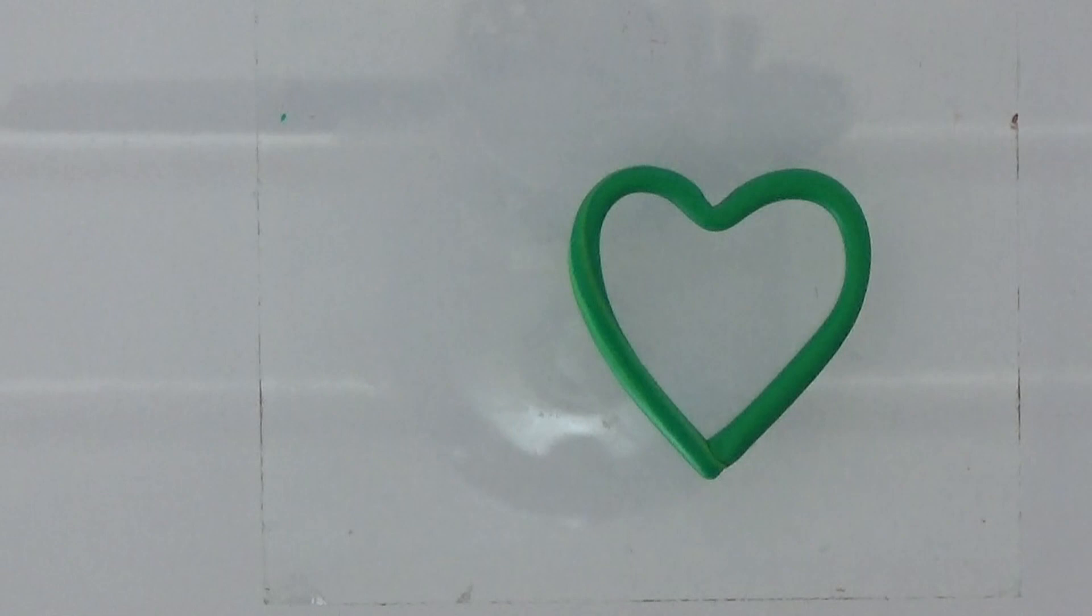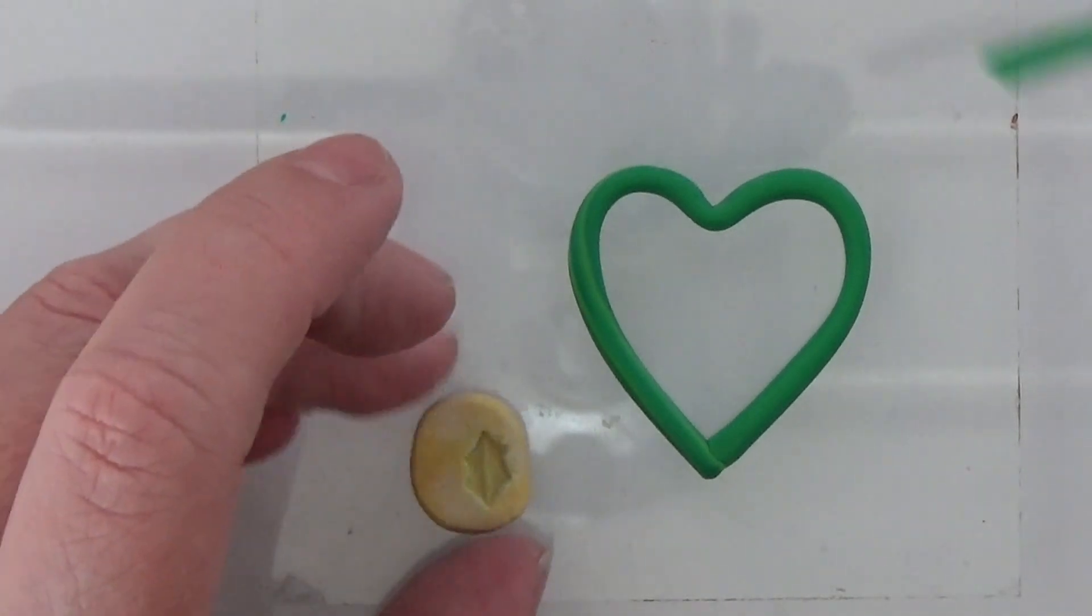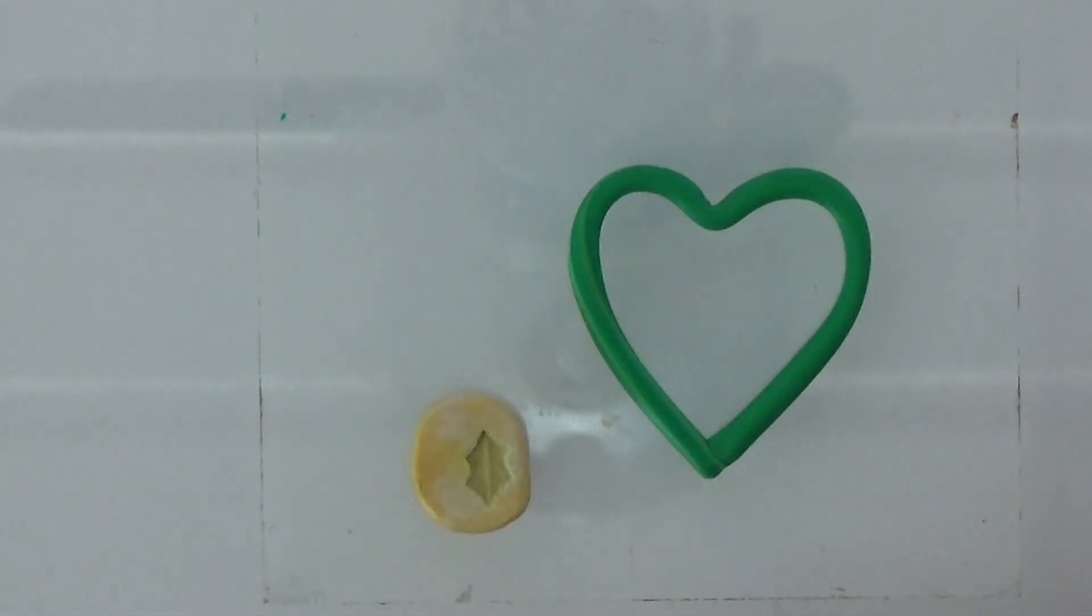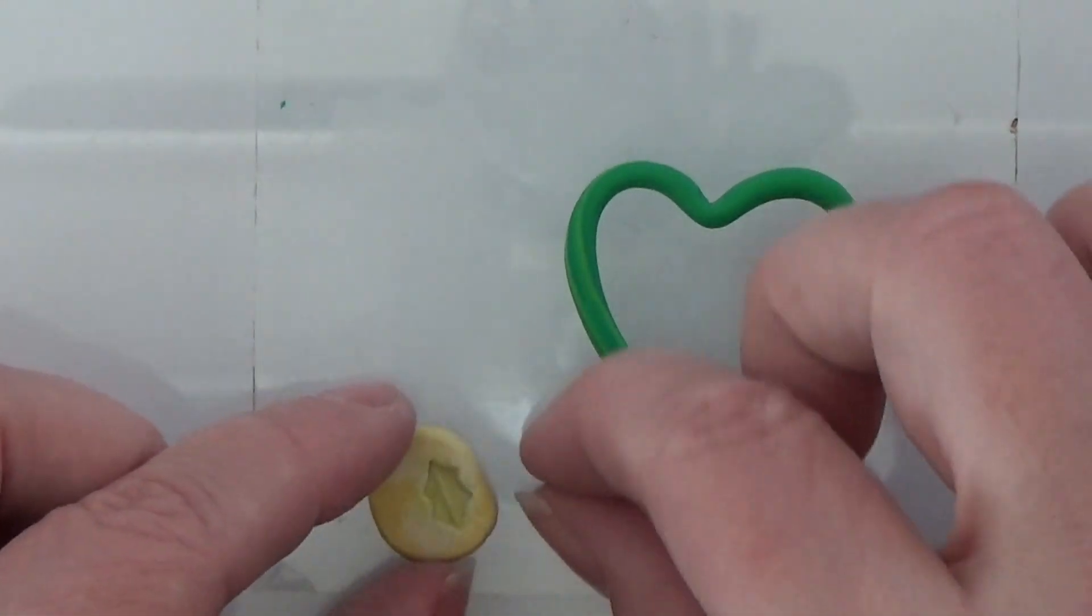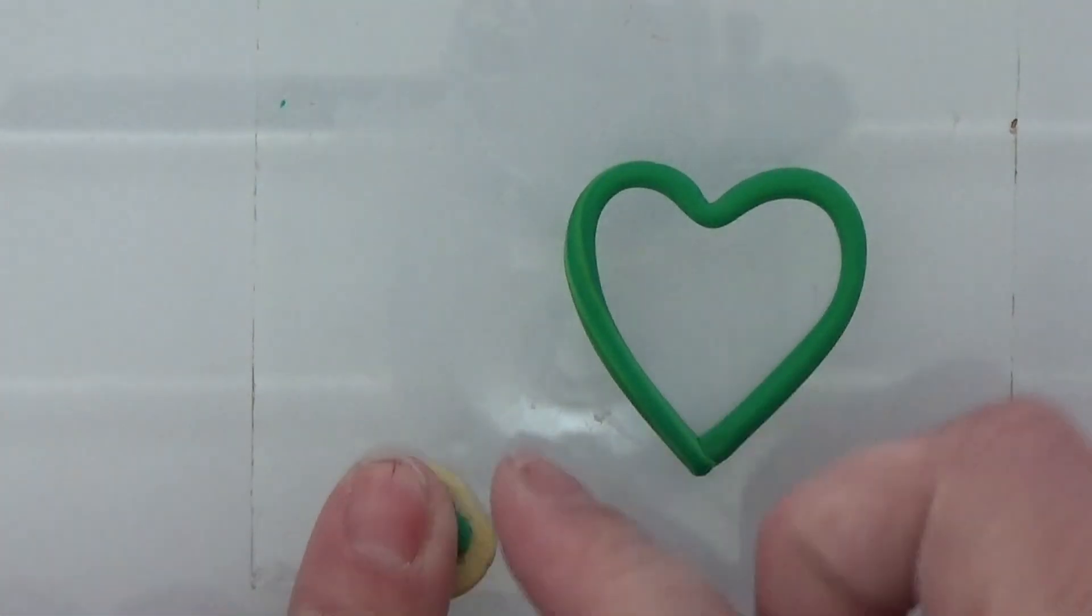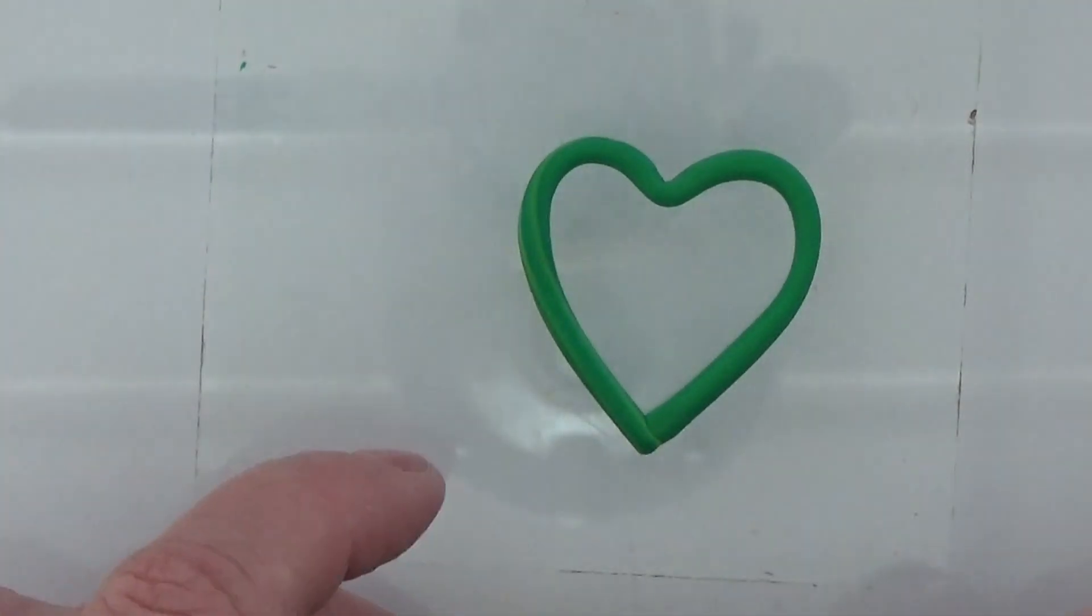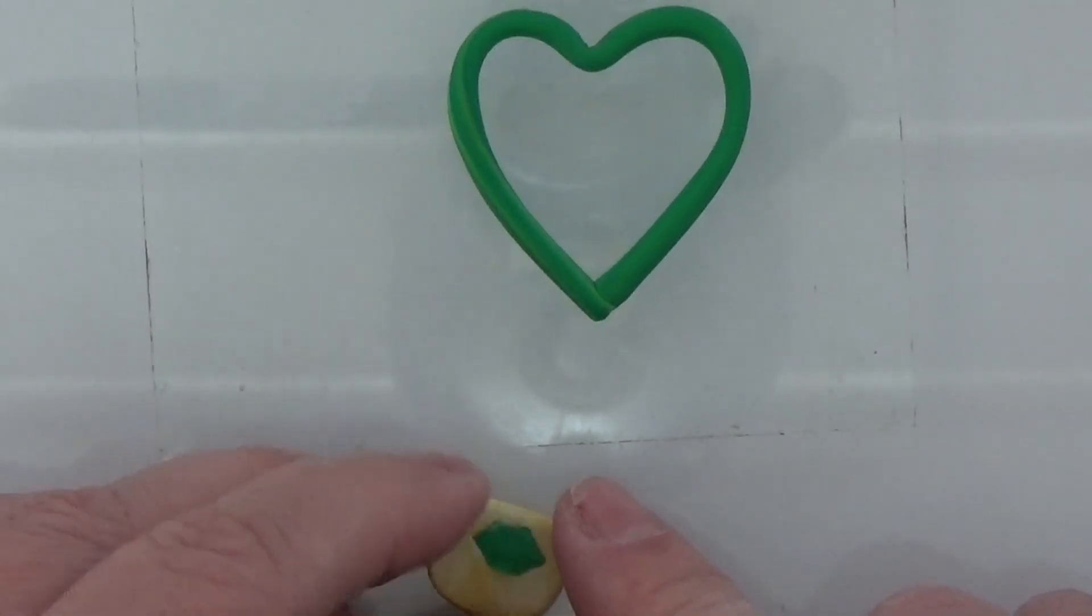So here I have the wreath itself but now we are going to make a ton of these leaves. I'm going to take some of my clay here, just a tiny bit of it, and squeeze it into my mold, making sure I fill up the mold.